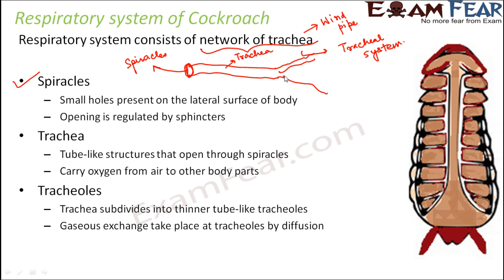The trachea further divides into branches called tracheoles, and these are the places where gaseous exchange takes place. The tracheoles are connected to the hemolymph — the fluid that flows through the body of insects, similar to blood in humans. Because of this connection, the exchange of gases takes place at the tracheoles.